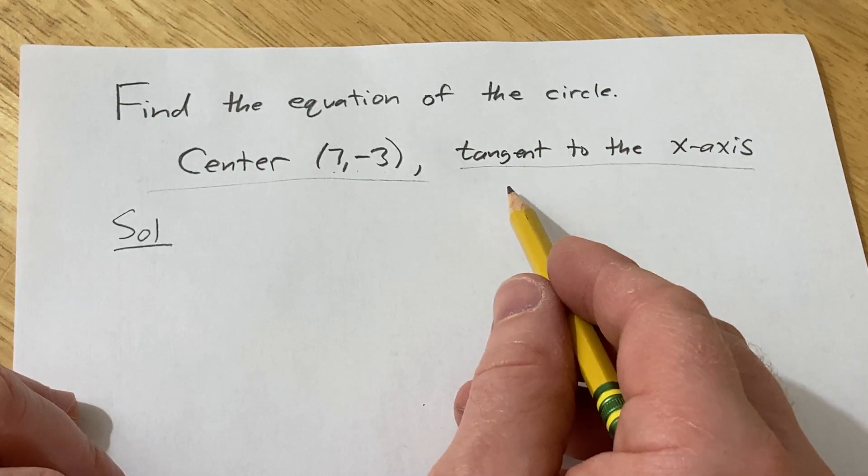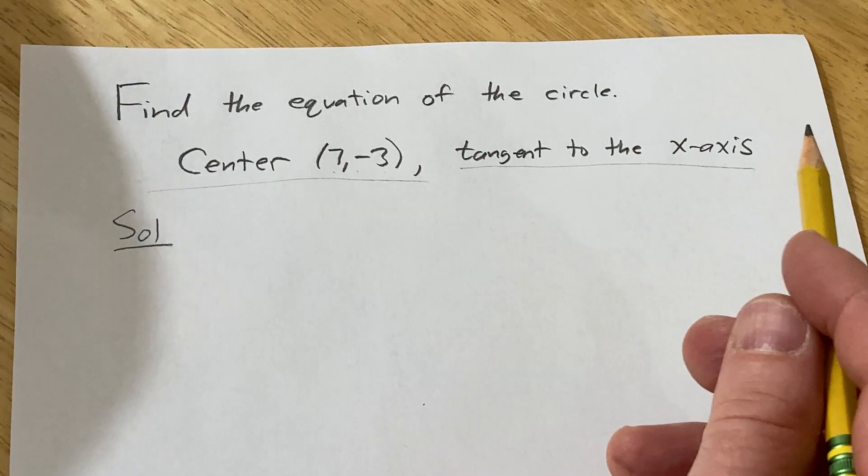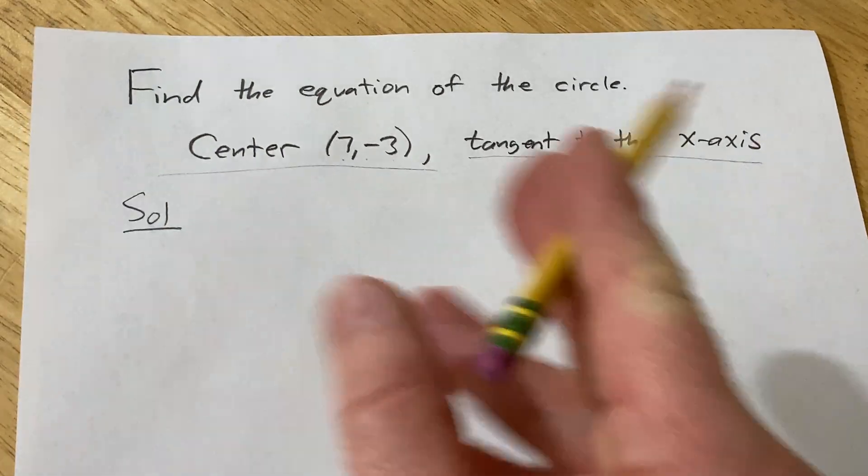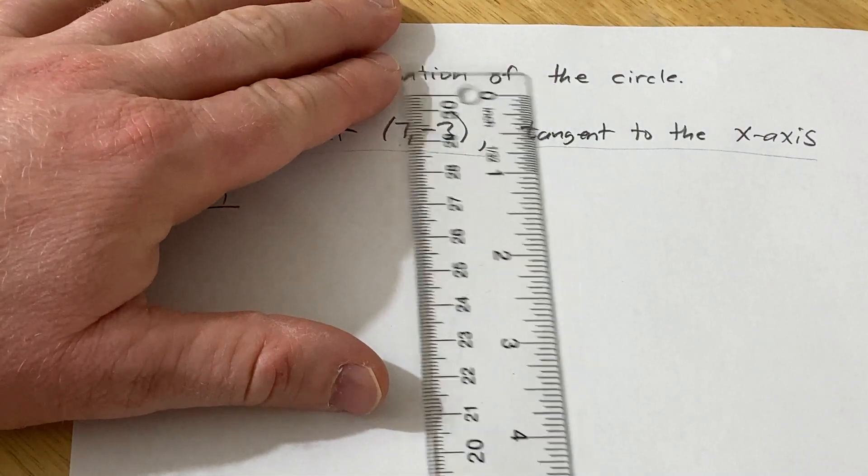To find the radius what we're going to do in this problem is draw a quick picture. I'm going to use my ruler here to draw a rough sketch of the xy-plane.